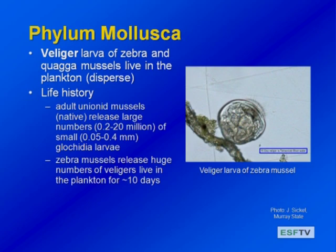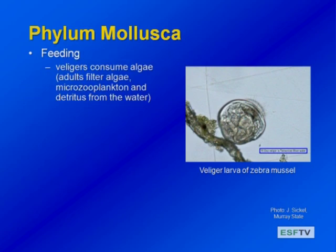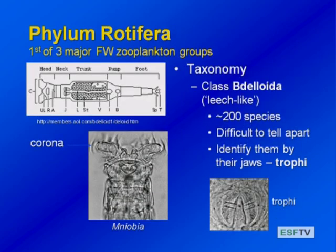In zooplankton tows during times when lots of veligers are being produced, you will find numerous veliger larvae in your samples. They're consuming algae — they're herbivores — and they're filtering other material. Some of the tiny zooplankton as adults are eaten by the adults, and they also consume detritus and algae.